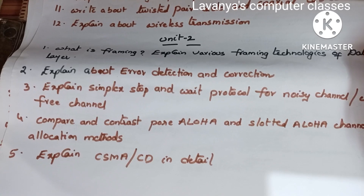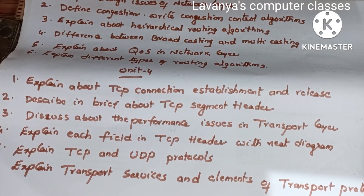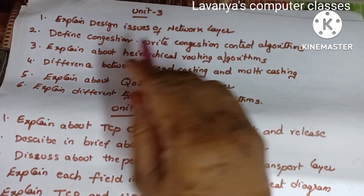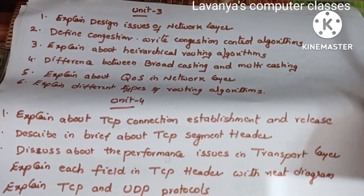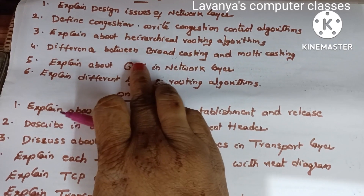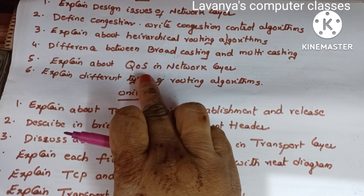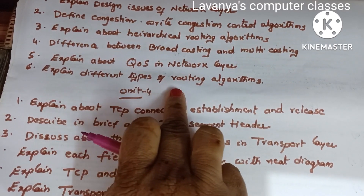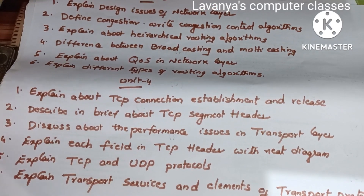Read all Unit 2 questions since there are fewer of them. Unit 3 questions: explain the design issues of the network layer, define congestion, and write congestion control algorithms — an important question. Explain hierarchical routing algorithms, the difference between broadcasting and multicasting, and explain about QoS (Quality of Service) in the network layer.